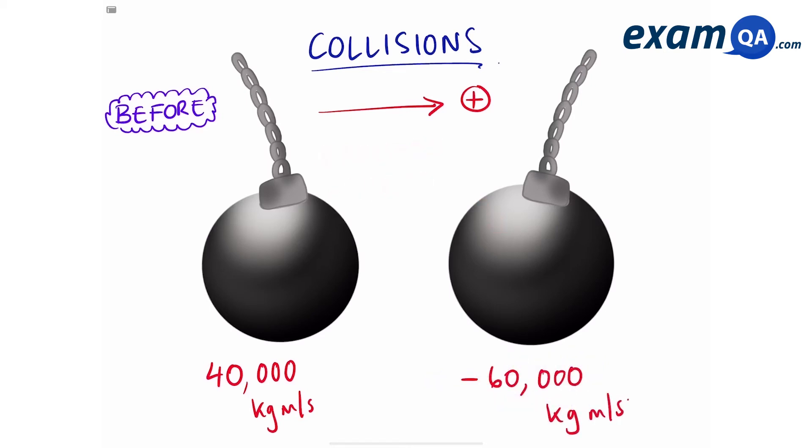So now we have momentum for both balls. But remember, the total momentum is going to be the sum of all of the individual momentums. Meaning that to find the total momentum in this scenario, I'm going to have to add them together. After adding, that gives me a final answer of minus 20,000. And that is the total momentum in the before scenario.